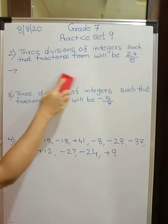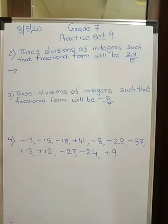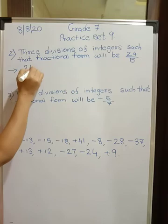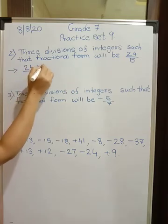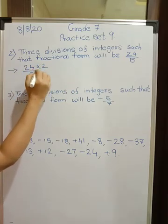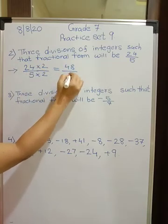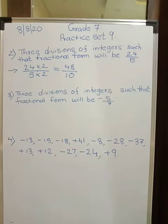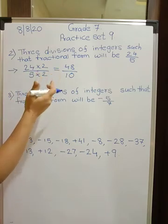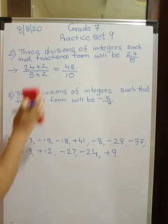Now you take any simple numbers, for example 24 upon 5, multiply by 2 numerator also and denominator also. What do you get? 48 upon 10. This is another form. You have to make 3, so first was 240 upon 50, second is 48 upon 10. Now third, let us see third form.